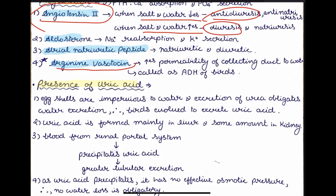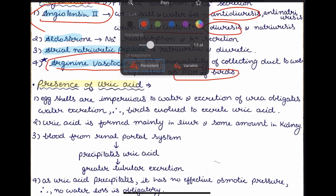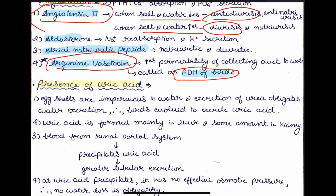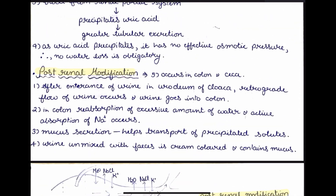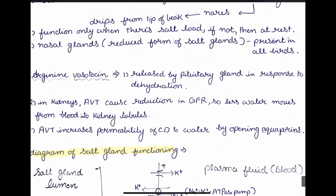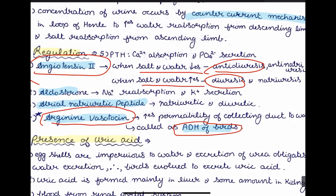Arginine vasotocin is very important — it is called the ADH of birds, and this is commonly asked in exams. ADH of birds is arginine vasotocin (AVT), and it increases the permeability of collecting ducts. It is released by the pituitary gland in response to dehydration. AVT causes a reduction in the glomerular filtration rate, so less water moves from the blood into the kidneys. AVT also increases the permeability of collecting ducts to water by opening aquaporins — channel proteins that transport water in and out of cells.